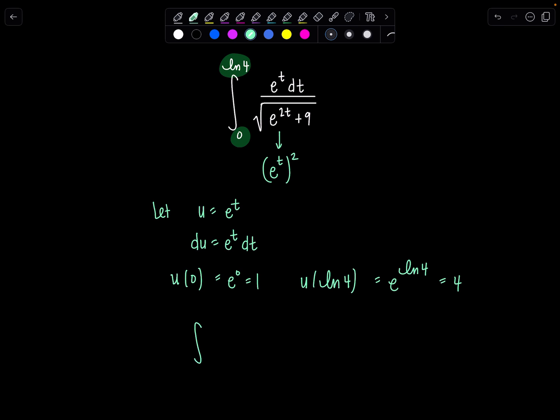Now let's rewrite everything in terms of u. We'll have integral from 1 to 4, e to the t dt, that's du, over square root e to the 2t is e to the t squared, which is u squared plus 9.